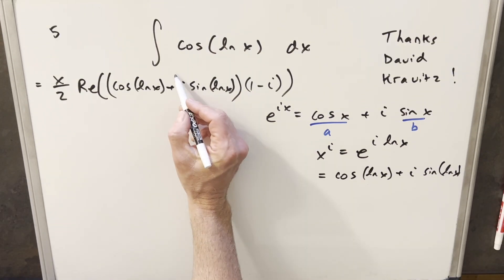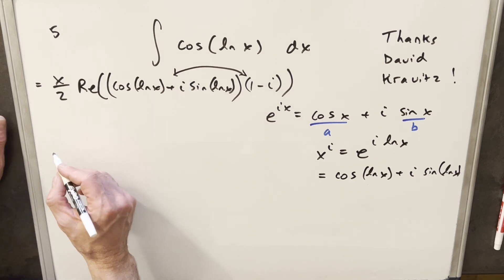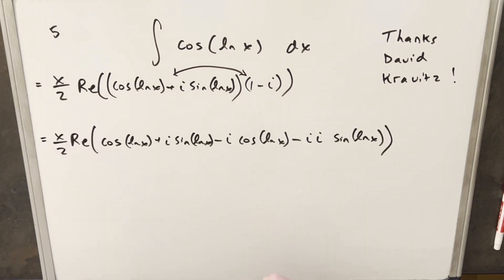But now from here, I just need to multiply this out times the 1 minus i over here. So let's rewrite this. Now from here, just a little more simplification to do.